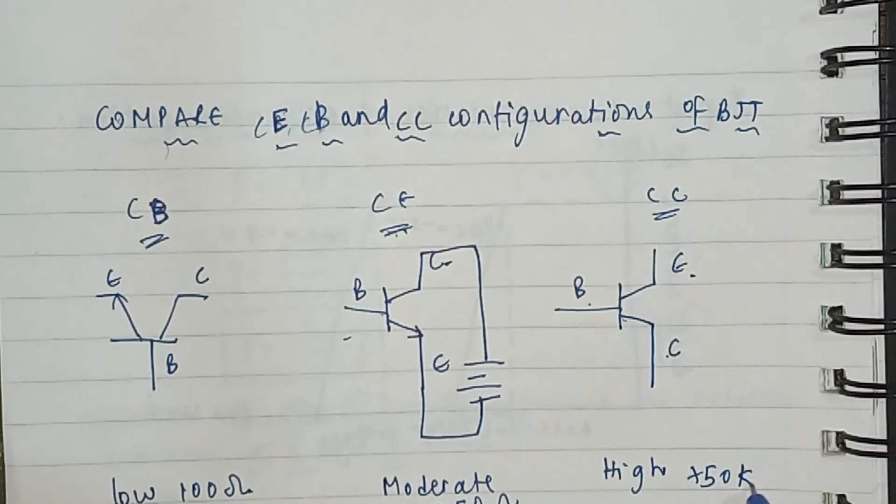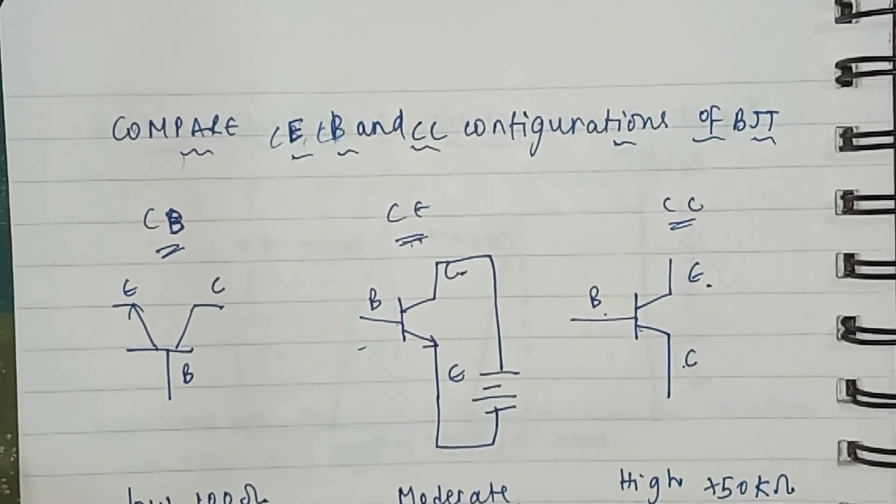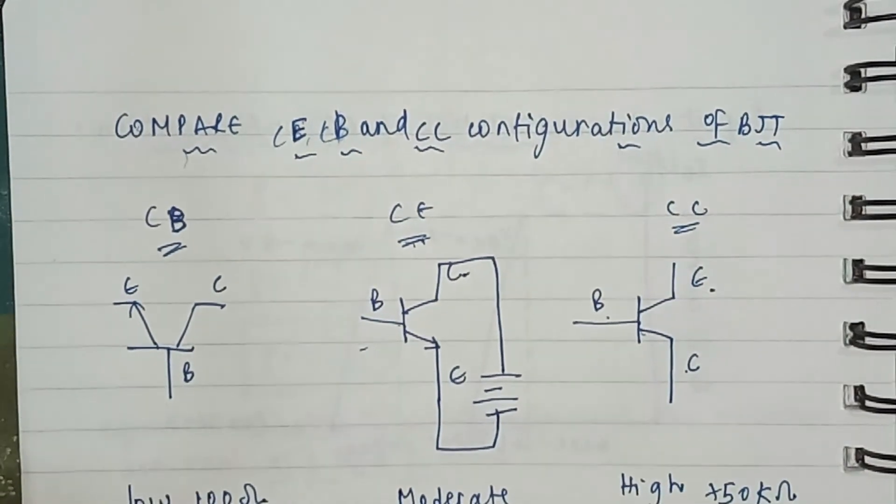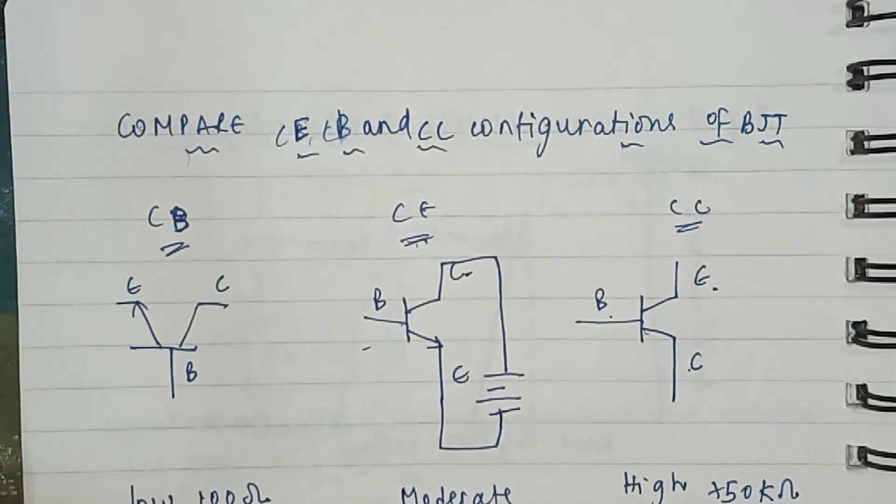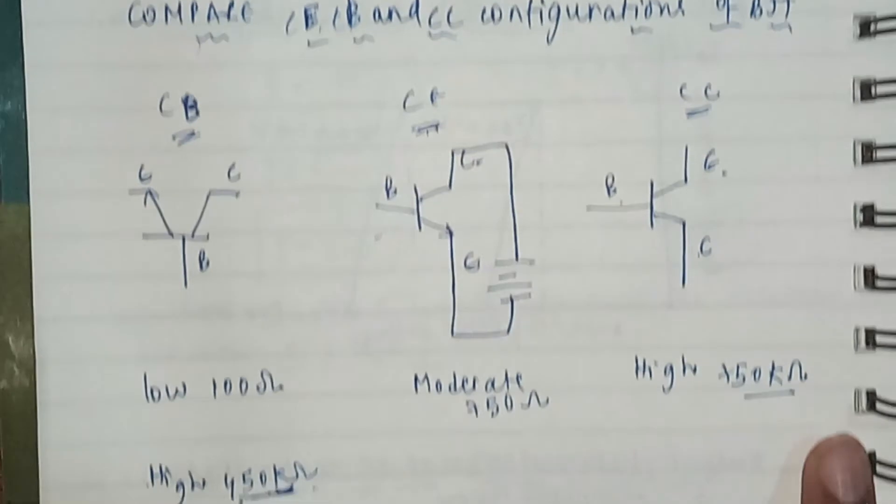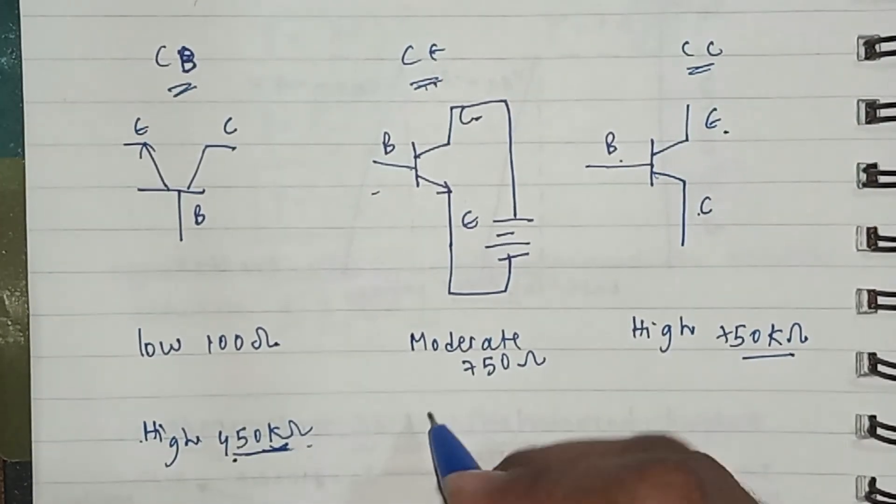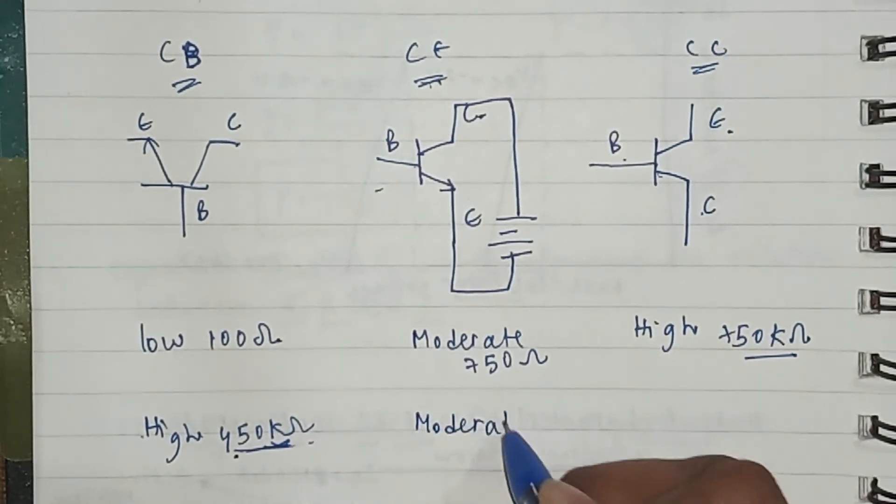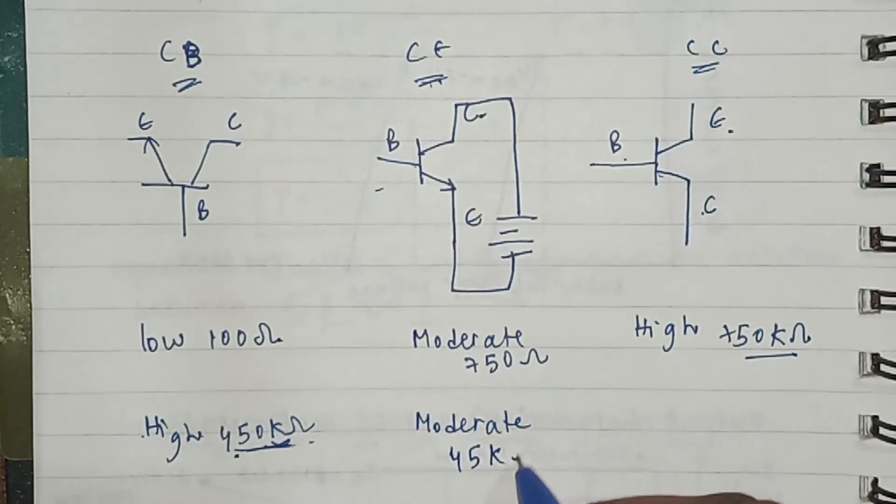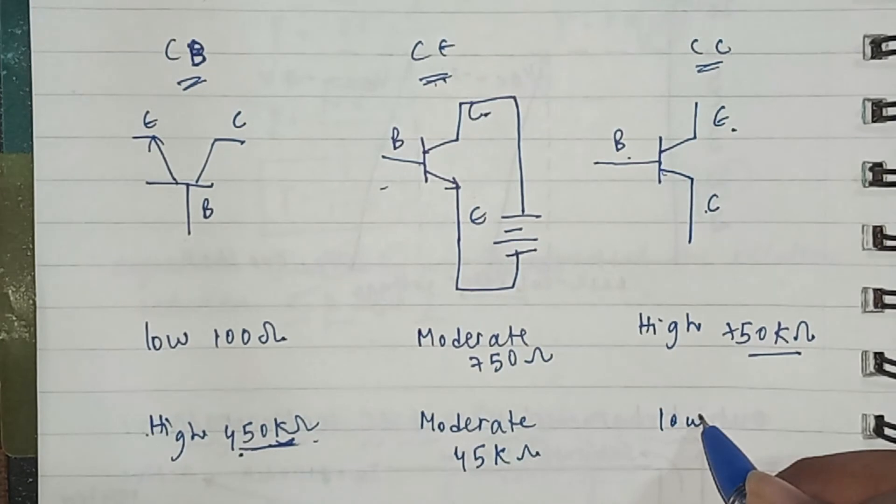The output impedance for CB configuration is high, around 450 kilo ohms. The output impedance of CE configuration is moderate again, around 45 kilo ohms. So the CC configuration has low output impedance, around 25 ohms.